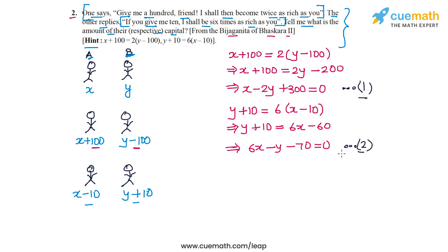Now we have these two equations in X and Y. All we need to do is solve them and find the values of X and Y. Let's use elimination to solve this pair. The coefficient of Y in the first equation is minus two, in the second equation is minus one. So let me multiply the second equation by two. This will make the equation into 12X minus two Y minus 140 equal to zero. Let's call this equation three.